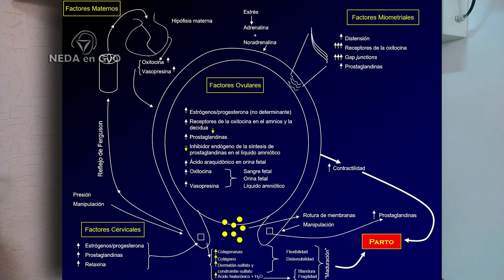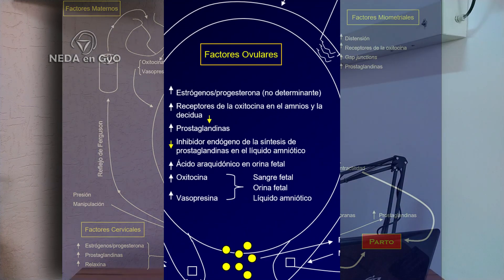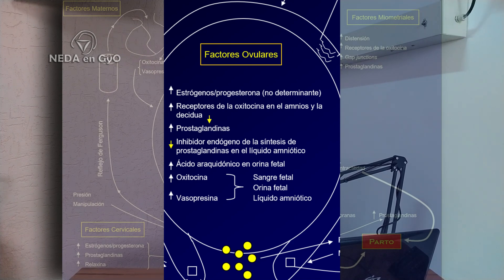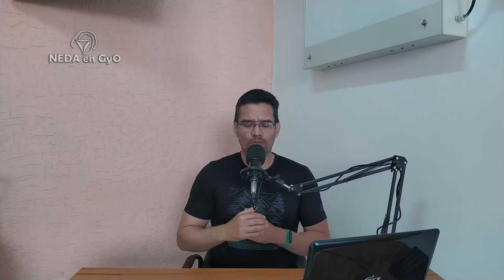A nivel ovular, el aumento del estrógeno también va a incidir. Habrá un incremento de receptores de oxitocina en el amnios y la decidua, lo que trae como consecuencia un incremento en los niveles de prostaglandinas, una disminución del inhibidor endógeno de su síntesis en el líquido amniótico, un incremento del ácido araquidónico en la orina fetal, y un incremento de oxitocina y vasopresina en la sangre fetal, orina fetal y líquido amniótico.